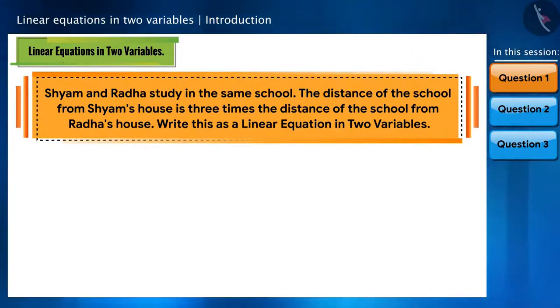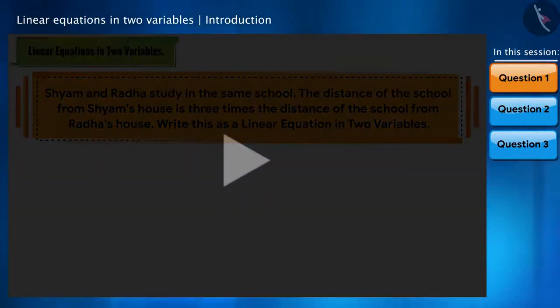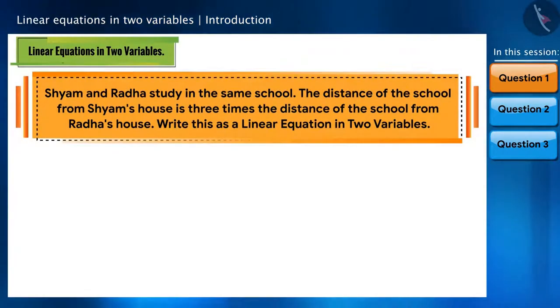Shyam and Radha study in the same school. The distance of the school from Shyam's house is three times the distance from Radha's house. Represent this as a linear equation in two variables. You can pause this video to think.